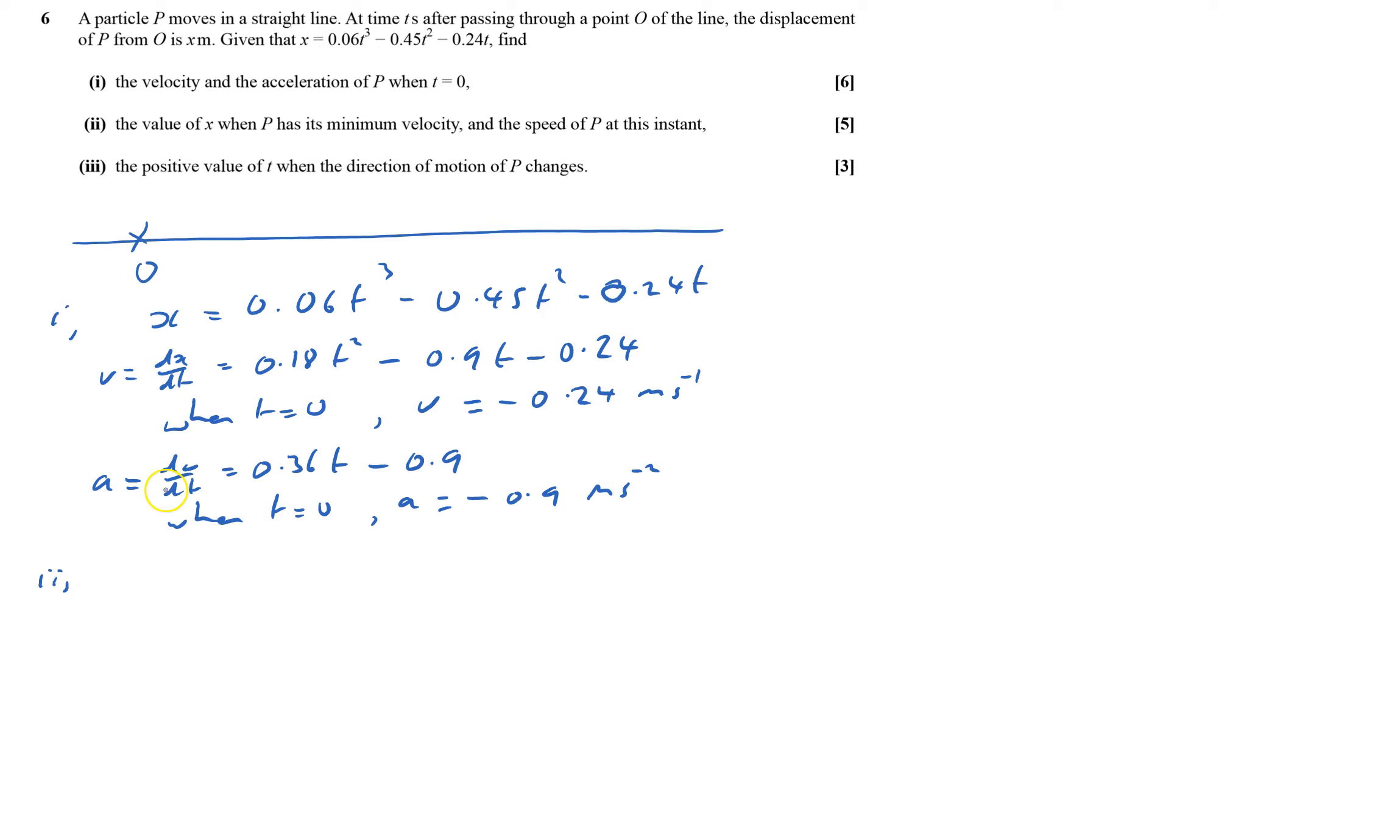Part two, six marks for that. Find the value of x when P has its minimum velocity. It's got its minimum velocity, and we'll work out speed, not the velocity, the speed at that instant. So minimum velocity means acceleration is going to be 0.